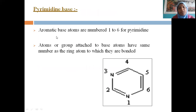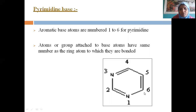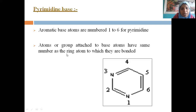Pyrimidine bases — cytosine, uracil, and thymine — are aromatic. The pyrimidine ring has six carbons numbered 1 through 6 in clockwise direction. Atoms or groups are attached to base atoms with the same number as the ring atom to which they are bound, so substitution positions are named accordingly at the first, second, third, fourth carbon, etc.